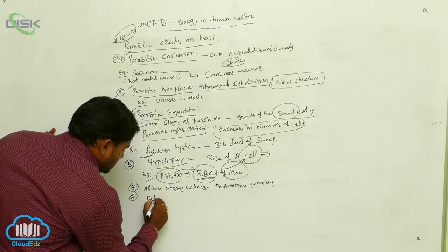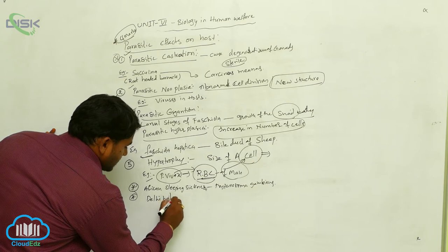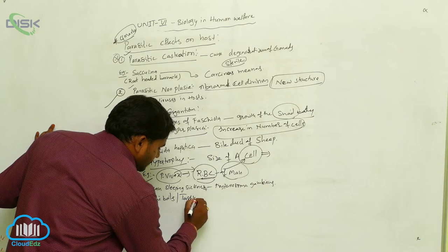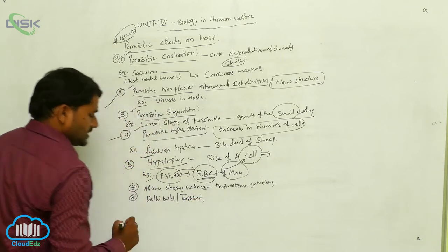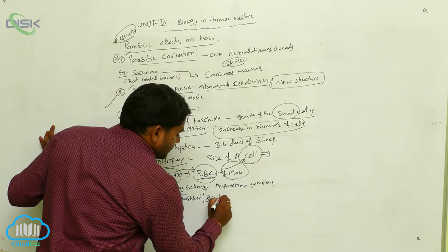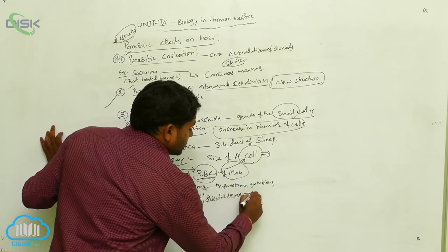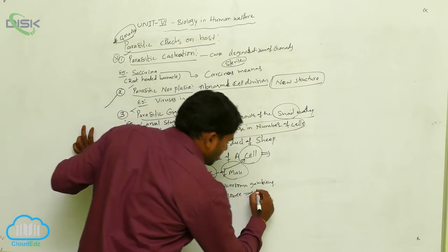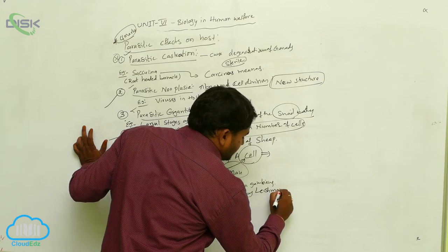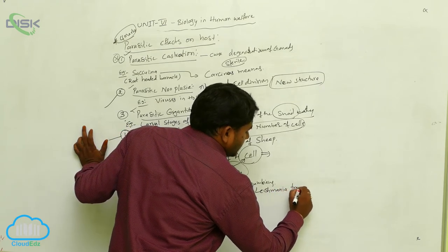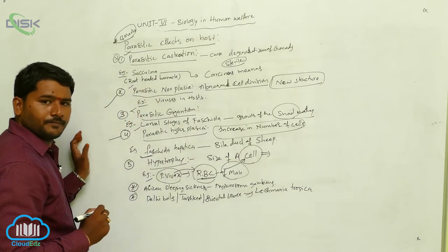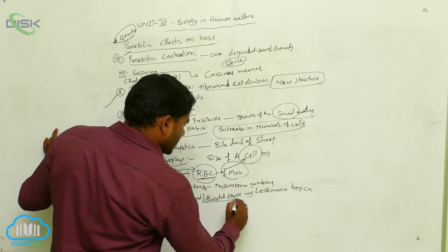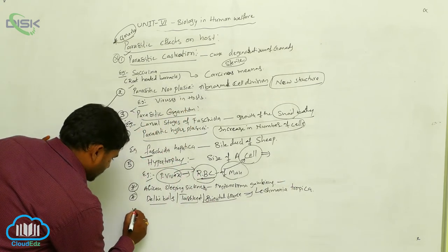Delhi boils, Tashkent disease, and Oriental sore are all the same condition. They are caused by Leishmania tropica.